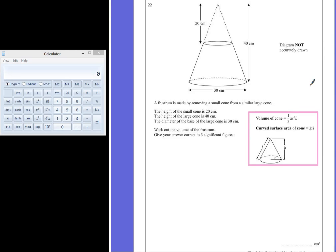Question 22. A frustum is made by removing a small cone from a similar large cone. The height of the small cone is 20 cm. The height of the large cone is 40 cm. The diameter of the base of the large cone is 30 cm. Work out the volume of the frustum, giving your answer correct to three significant figures.